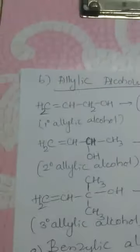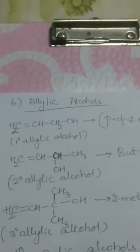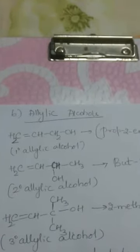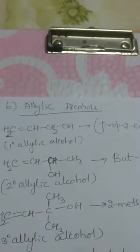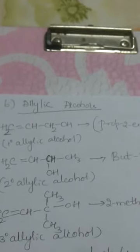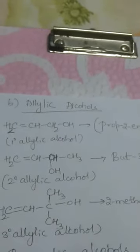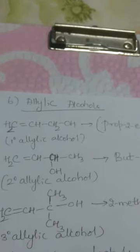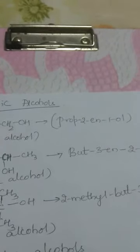Moving to the second type: allylic alcohols. The allyl group is CH₂=CH–CH₂–. Here the OH group is bonded to the allylic group: CH₂=CH–CH₂OH, which is specifically a primary allylic alcohol. Its IUPAC name is prop-2-en-1-ol.